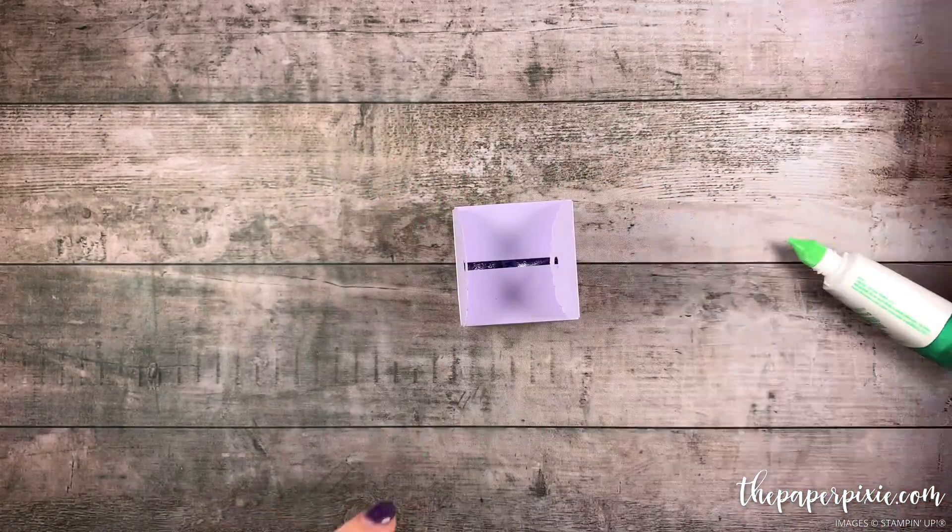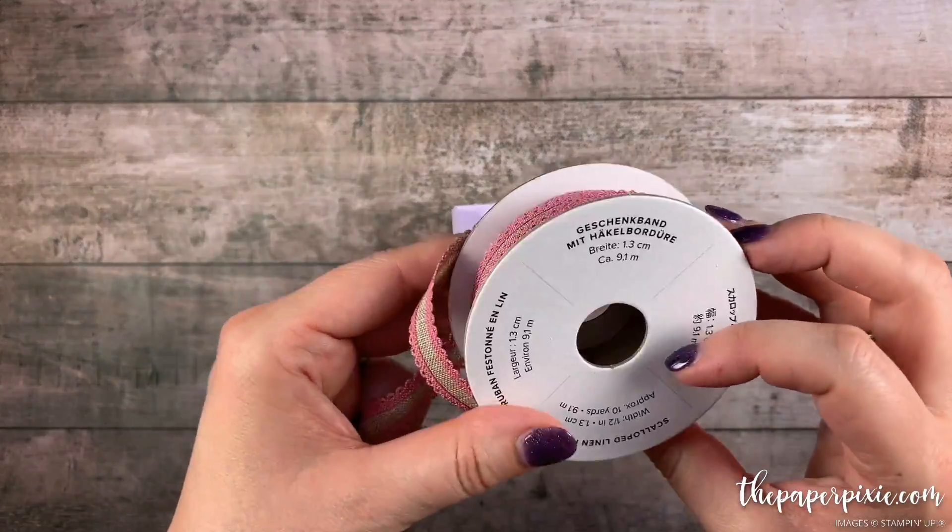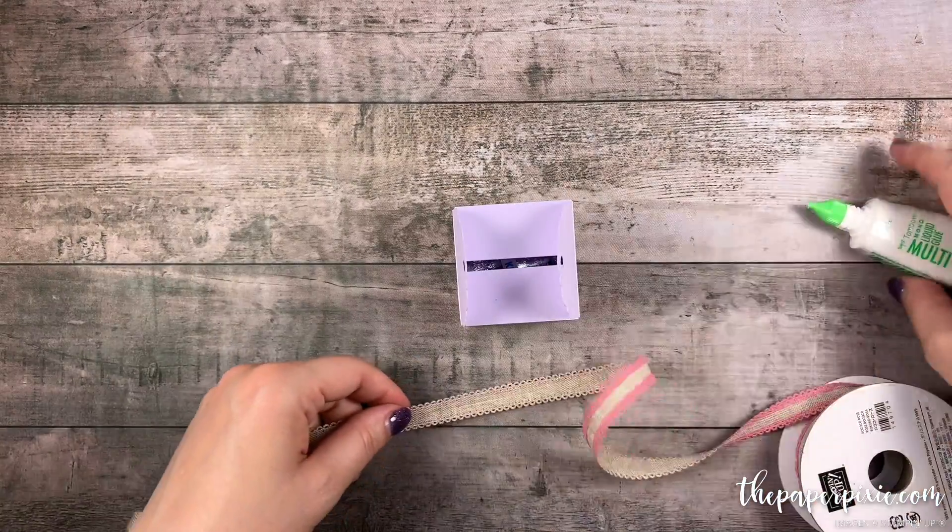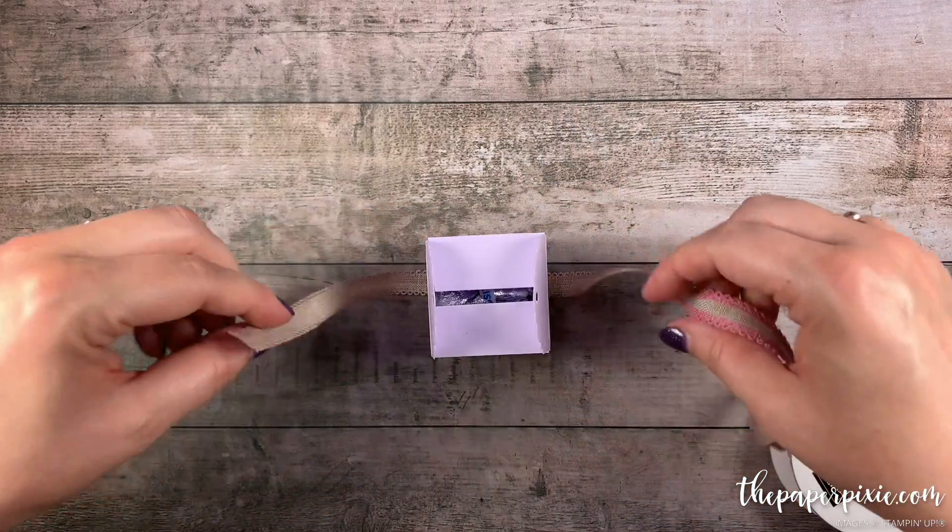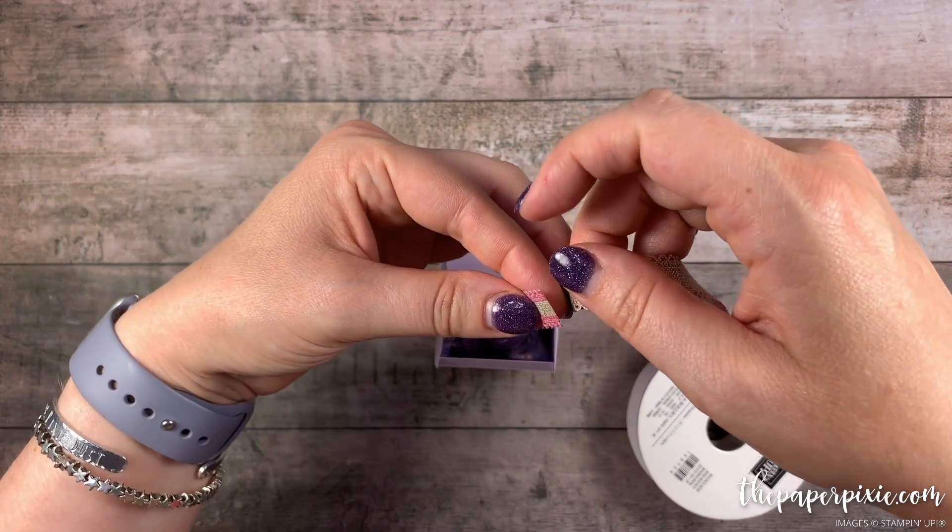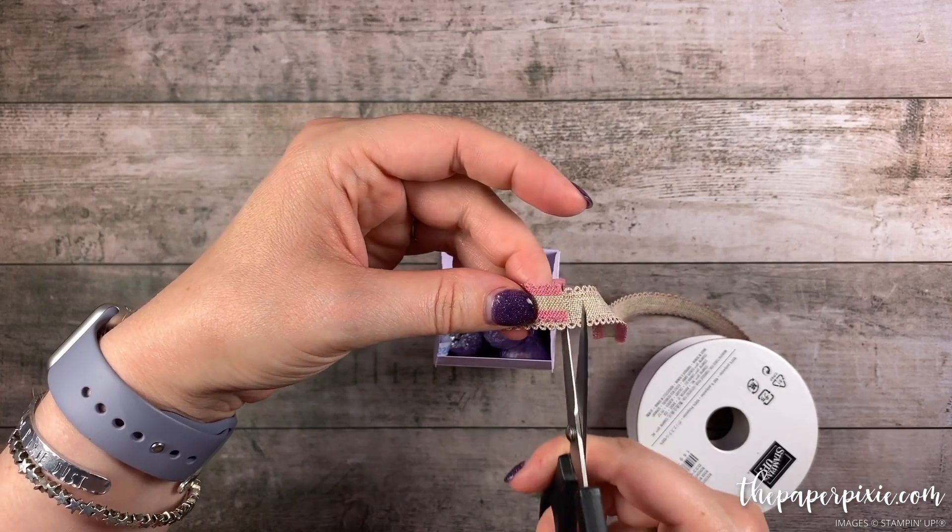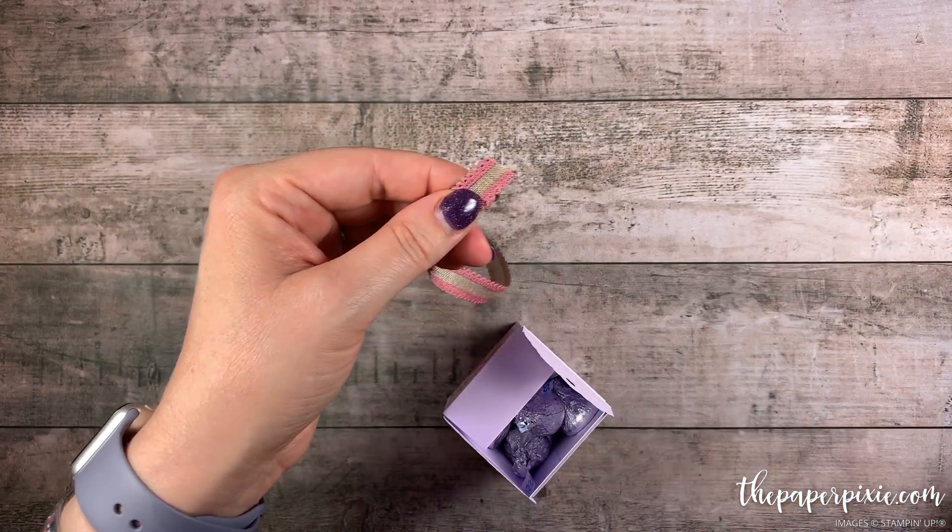So to close this off we're going to do something a little bit different. I'm going to use the Rococo Rose Scalloped Linen Ribbon. And I'm just going to cut a piece that is going to fit around this box. We're just going to tie it in a half knot at the top. And then the trick to feed this into the holes from the tag topper punch.